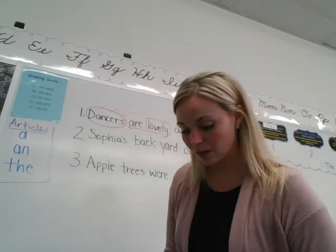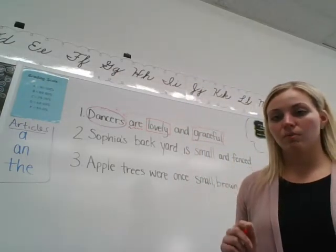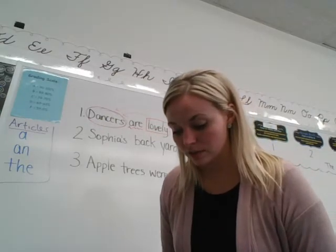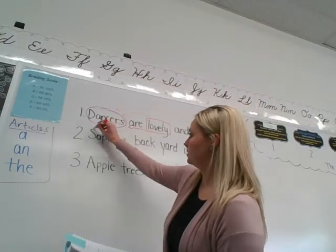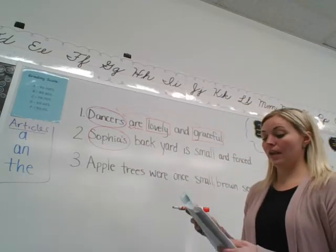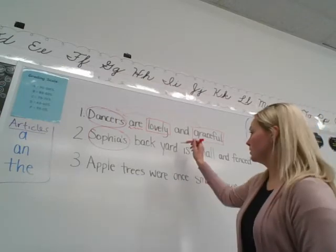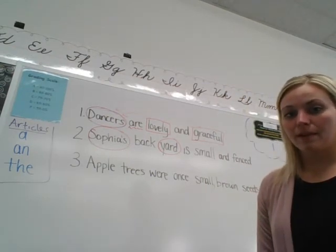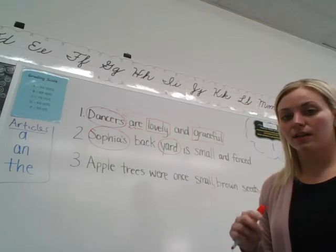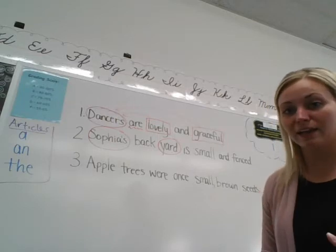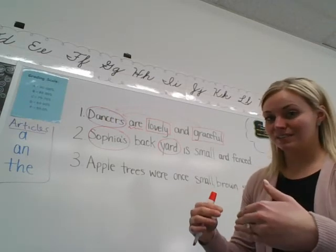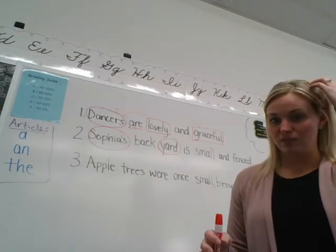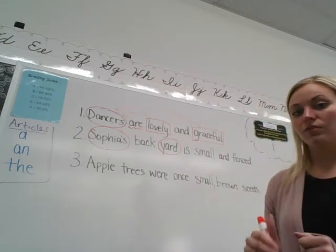Our next sentence: 'Sophia's backyard is small and fenced.' Find your nouns — pause me and find them. You should have found that Sophia and yard are your nouns, because Sophia is a person and yard is a place. Now, Sophia can't 'back,' she can't 'small,' she can't 'fenced,' but she is something. So our verb is another tricky one in this sentence, and it's 'is.' That's why we're doing it together — 'is' is our verb.